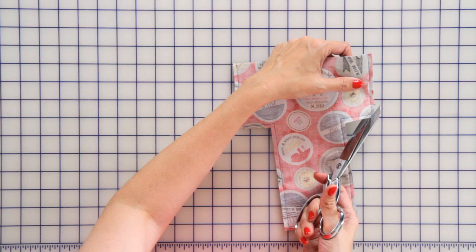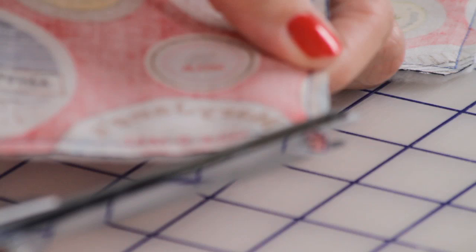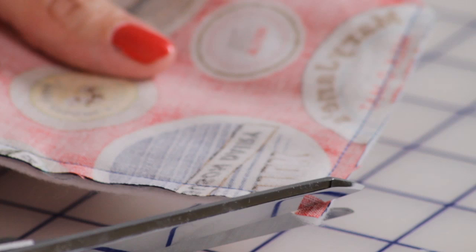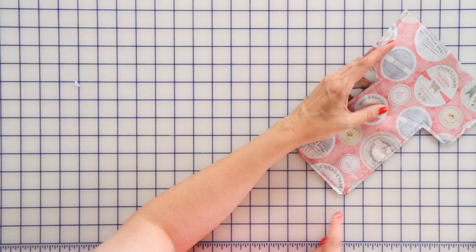Now we're going to clip our four corners. We're going to cut a little triangle off right before your stitching. This is going to help reduce bulk and when you turn it inside out, it's going to look better.